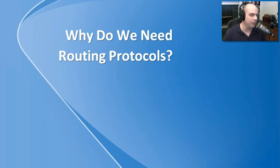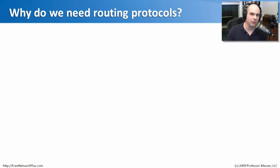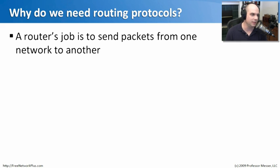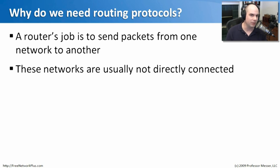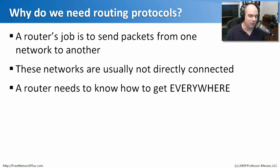Let's talk about why we need routing protocols to begin with. A router's job is to get packets from one network and send them to another network — that's all a router is really responsible for at its basic level. These are usually networks that are not directly connected, such as when we're on one side of the internet and need to talk to a network on the other side. Connecting multiple routers over long distances becomes a little more complex, so routers really need to know how to get anywhere we might need to go.